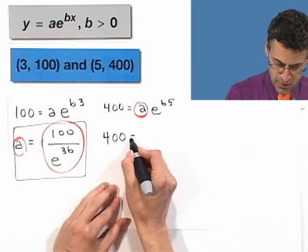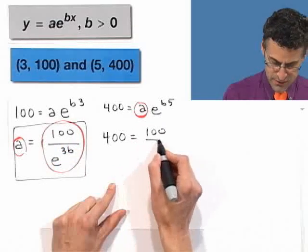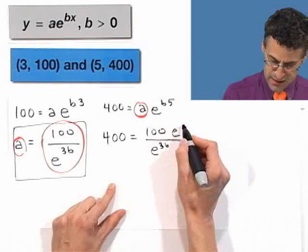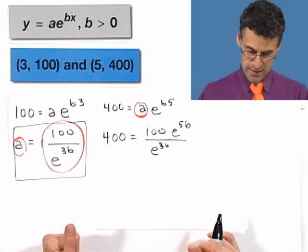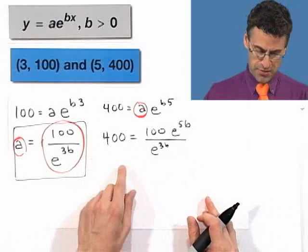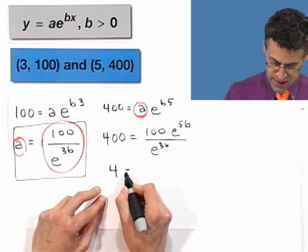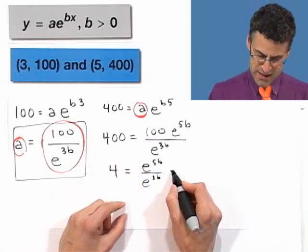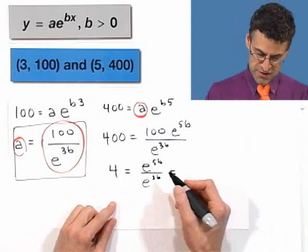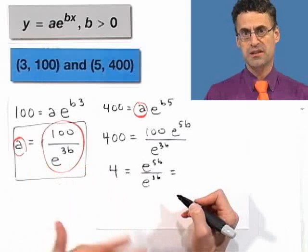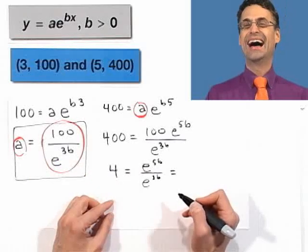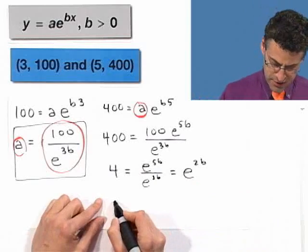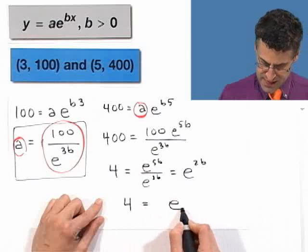And if I do that, I'll have an equation just in terms of B. So what I'm going to do here is I'm going to insert this value and replace it by this. That's going to remove one of the unknowns. It'll get rid of A. So I'll see 400 equals 100 divided by E to the 3B, and then on the top, I have E to the 5B. So look, I got rid of the A. And now I can actually simplify this. If I divide both sides by 100, I see 4 equals E to the 5B divided by E to the 3B. Same base, which means I subtract. So what's 5B minus 3B? I'm left with 2B.